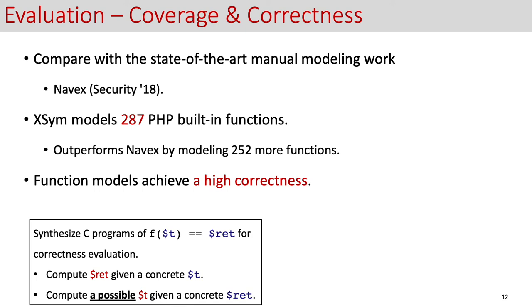In particular, in our evaluation for each building function f, we synthesize the corresponding C program. We test in two directions. First, given the corresponding arguments, we compute the return value from XSym. On the other hand, given a concrete return value, we invoke XSym to compute a possible argument. We then execute the function f on the argument to verify the return value.